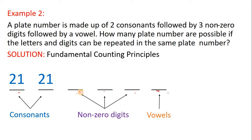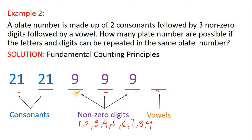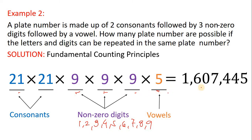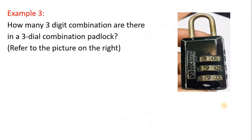For actions 3, 4, and 5, talking about non-zero digits: we have 1, 2, 3, 4, 5, 6, 7, 8, and 9 — so you have 9 options for each of those actions. For action number 6, you have 5 options — the vowels A, E, I, O, and U. Take the product of all these numbers and you end up with 1,607,445 possible plate numbers.